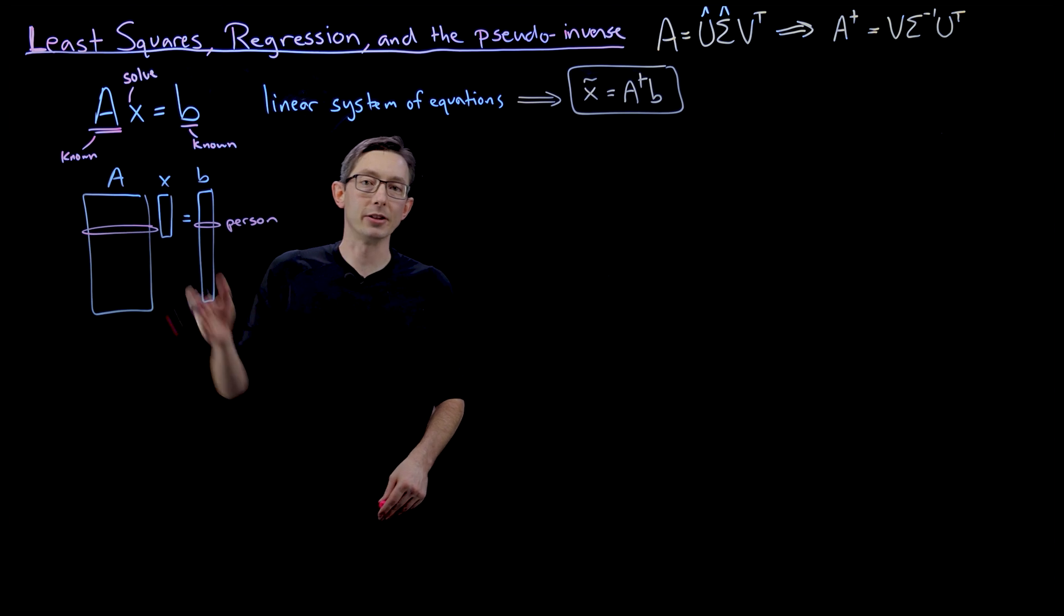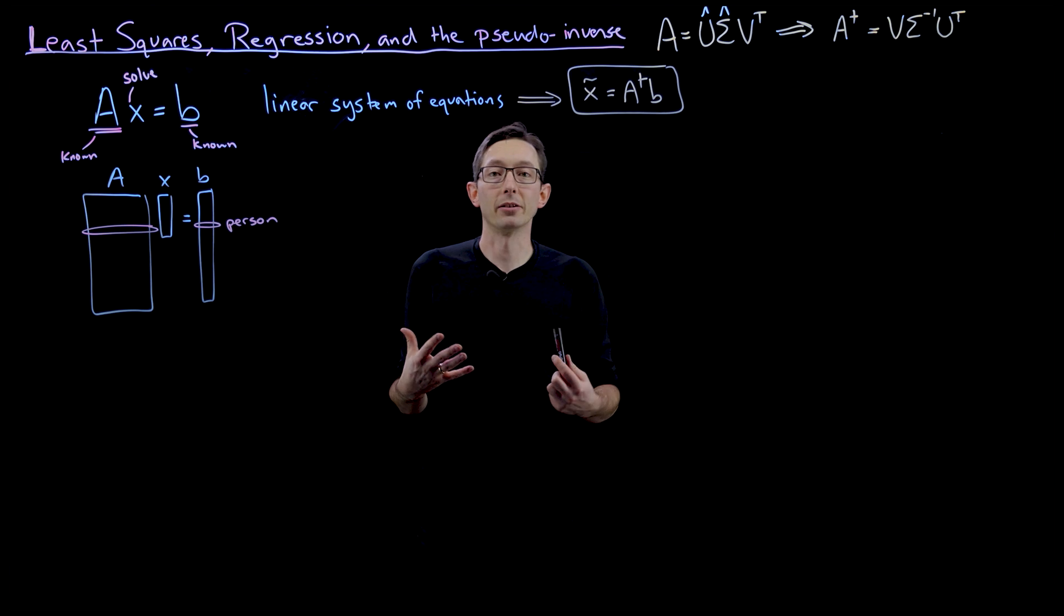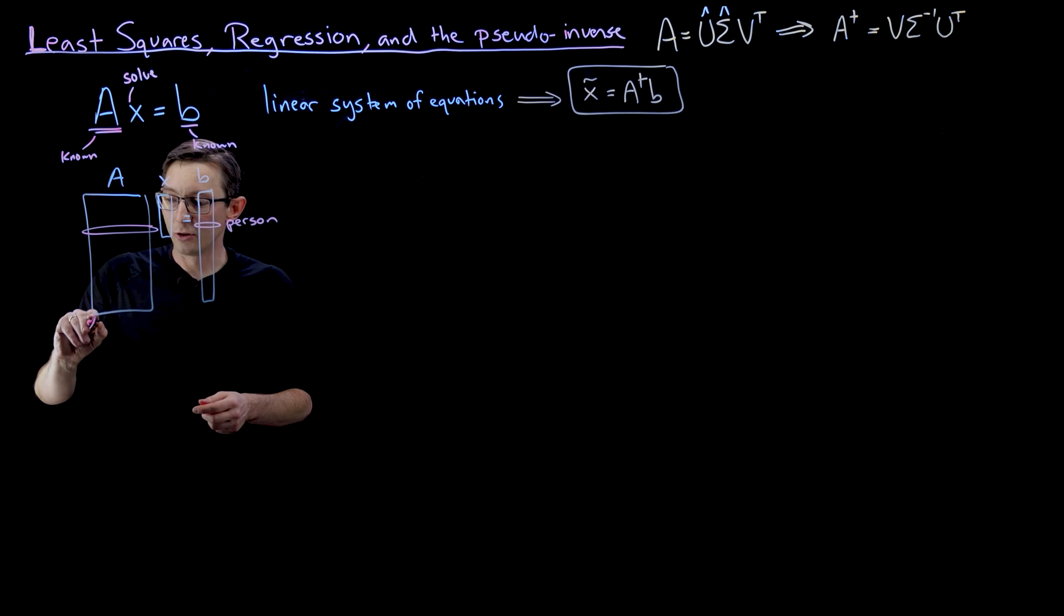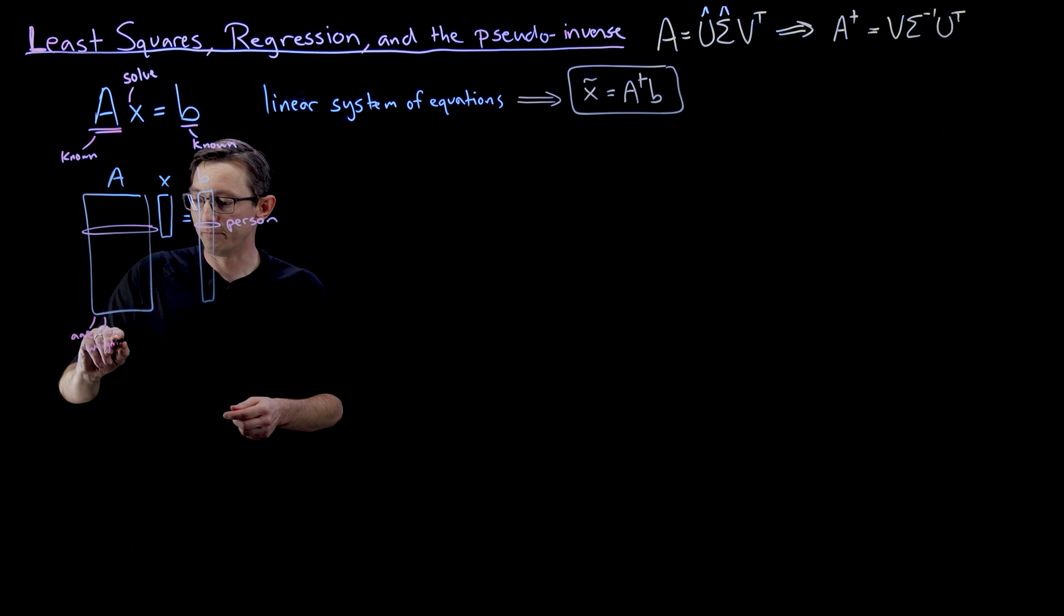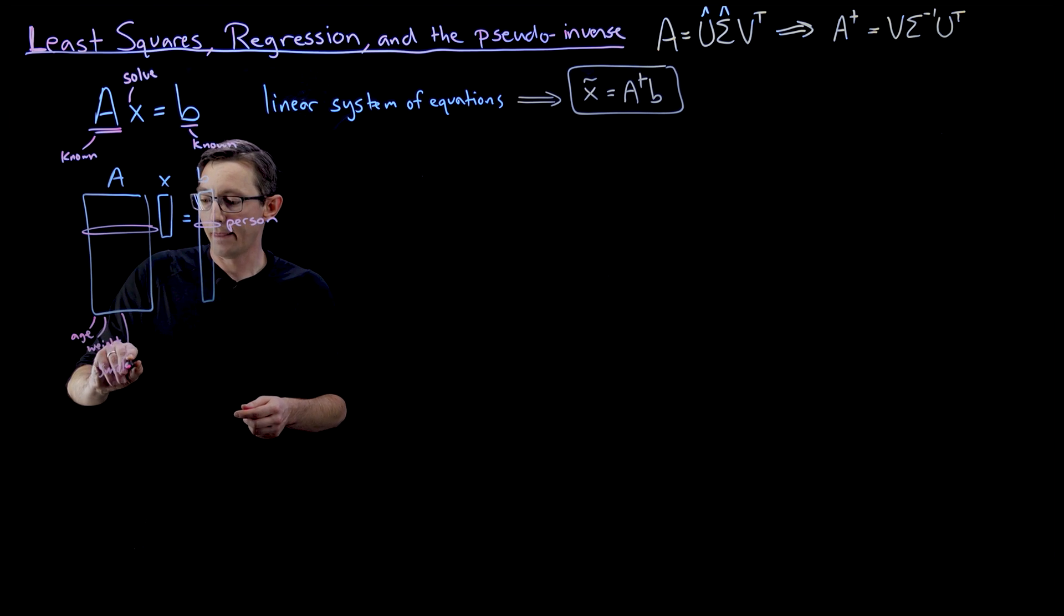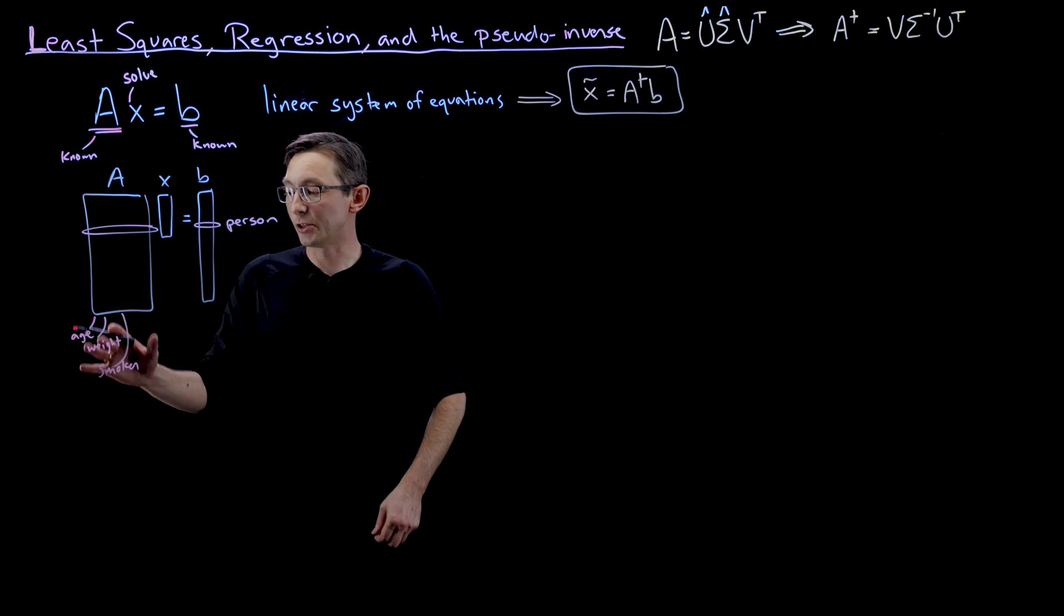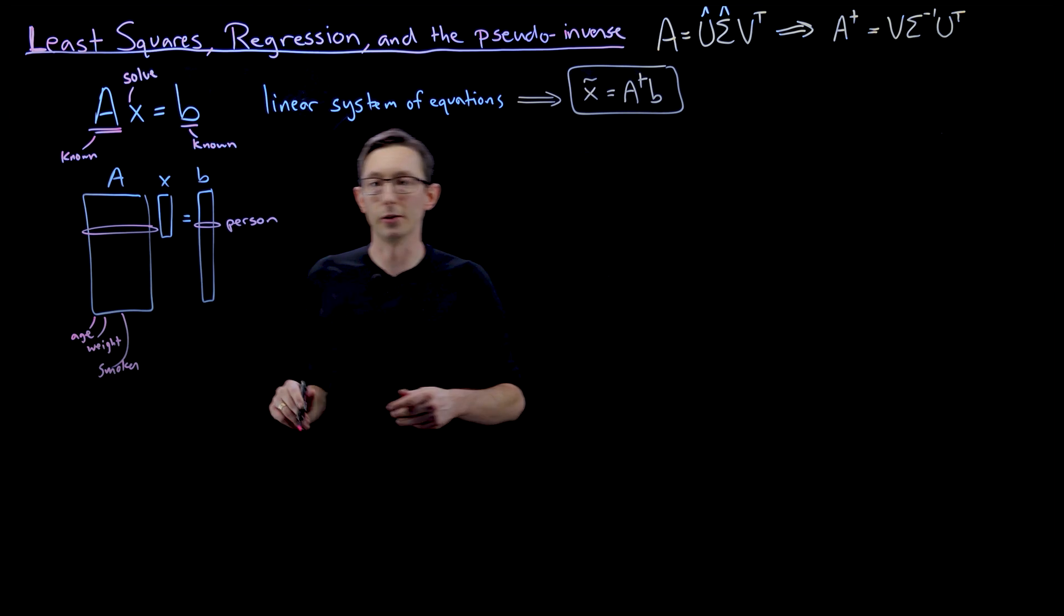And every column of the A matrix are risk factors. Like you might have age, weight, are you a smoker, et cetera. Age, weight, smoker, diet, so on and so forth.